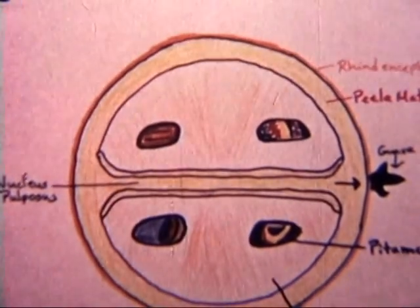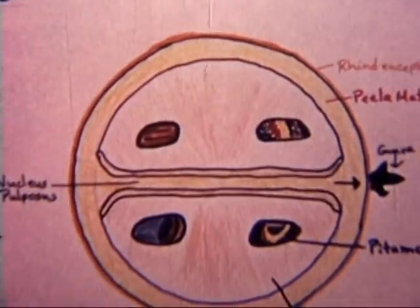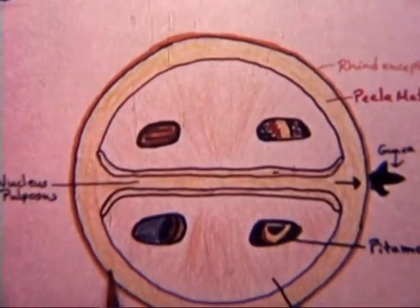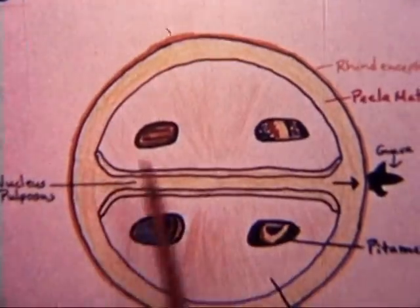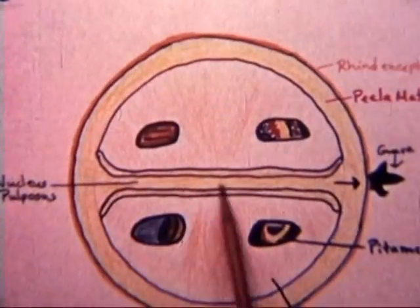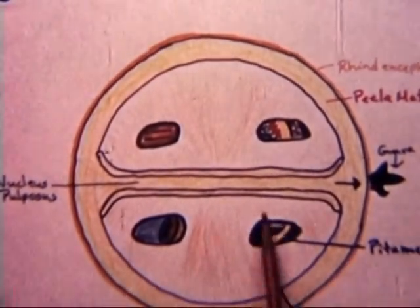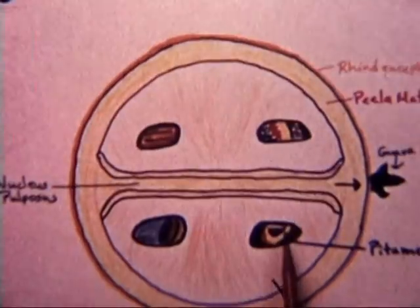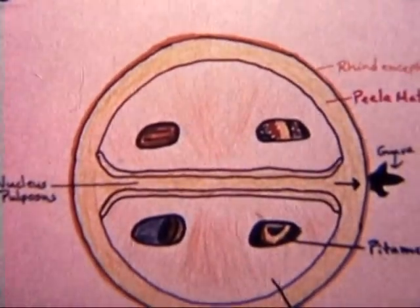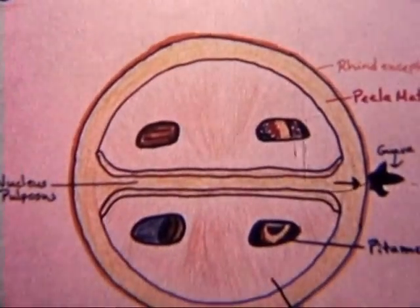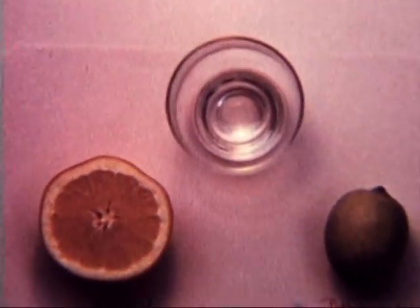Reviewing again diagrammatically, note the rindencephalon, the pila mater, the nucleus pulposus leaving the Guava, and pitamens. The pitamens fuse with lobe cell nuclei to form the pilostriatum.